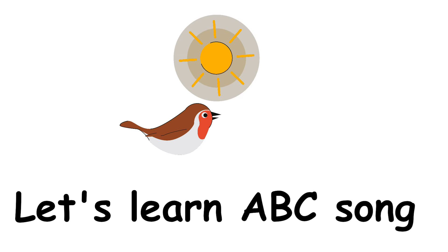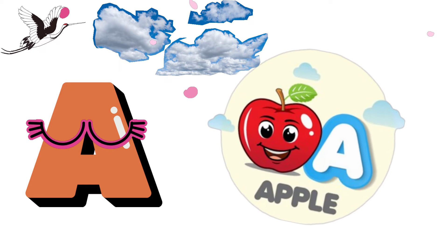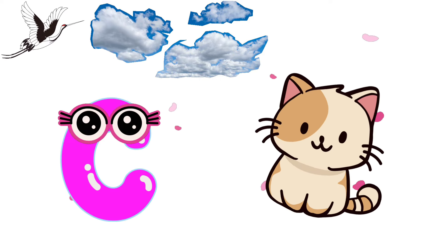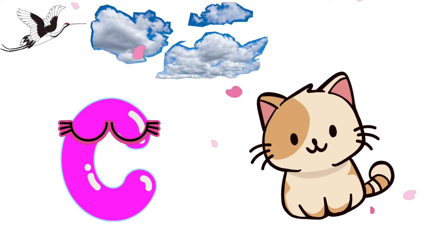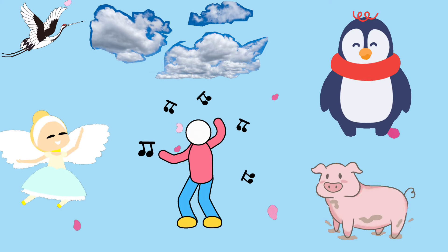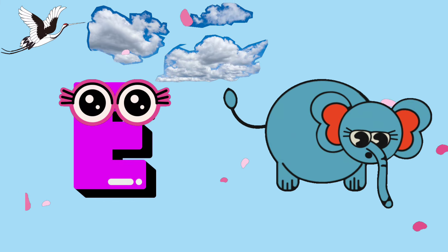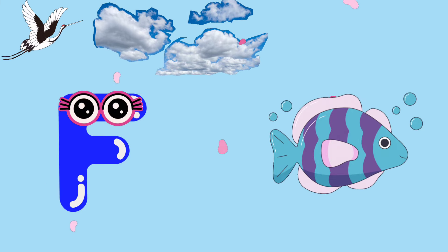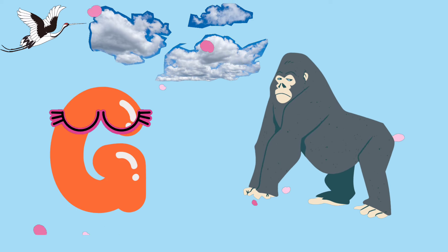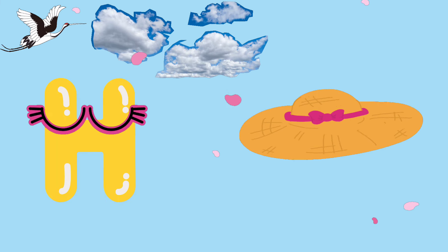Let's learn the ABC's song. F is for fish, fish. G is for gorilla, pet pet gorilla. H is for hat, hat hat hat.